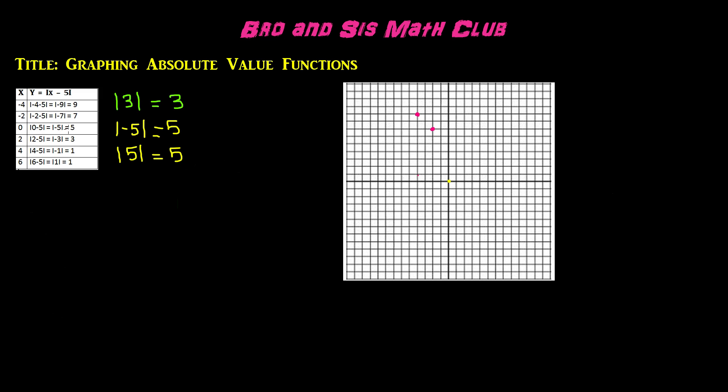Then, we have 0, 5, which will be right here. Then, we have 2, positive 3, which will be over here. Then, we have 4, positive 1, and then we have 6, positive 1.